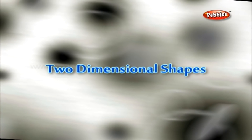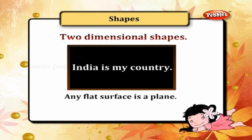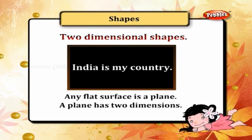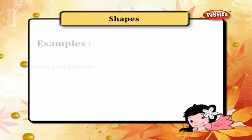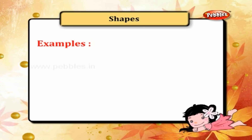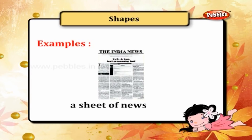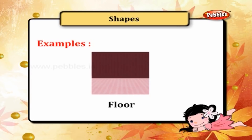Two-dimensional shapes. Any flat surface is a plane. A plane has two dimensions. Examples: top of the table, top of a textbook, a sheet of newspaper, floor.